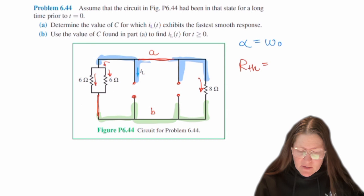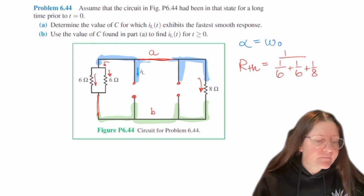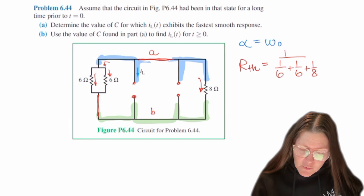So this is going to mean that all of these are going to be in parallel. So you'll have 1 over 1 over 6 plus 1 over 6 plus 1 over 8. And so it's going to be 24 over 11.